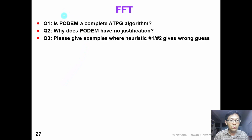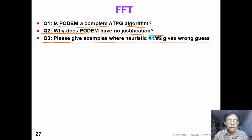At the end of this chapter, we want to raise some food-for-thought questions. Question number one: is the PODEM algorithm a complete ATPG algorithm? That means, are we guaranteed to find a test if it exists? Question number two: why does PODEM have no justification? Question number three: we have already shown an example where heuristic number 3 fails — can you give more examples where heuristic number 1 and number 2 fail? I hope you enjoy this video. Please think about these interesting questions. Bye-bye.